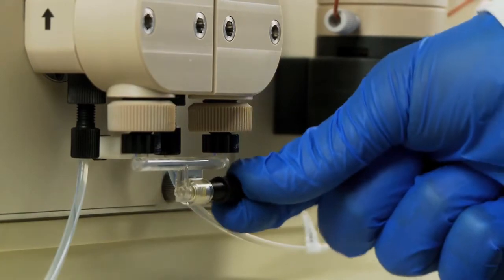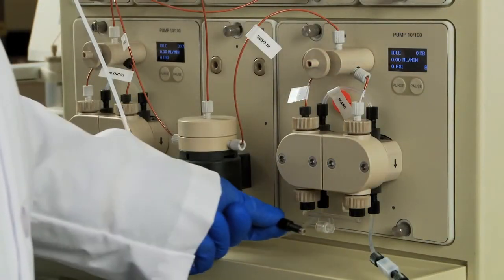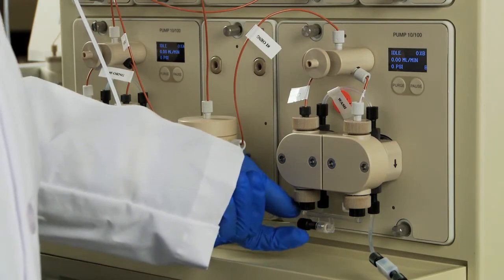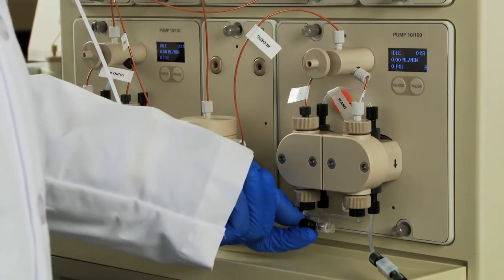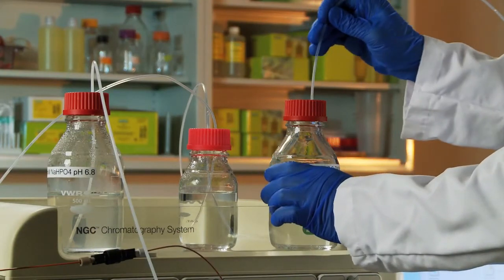Next, you will connect the buffer inlet tubing to both system pumps A and B. Securely tighten the fittings to ensure a proper seal and prevent buffer leaks. Place the ends of the inlet tubing into your buffer bottles.